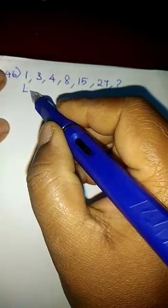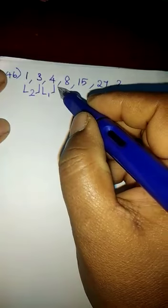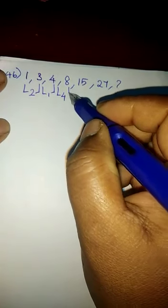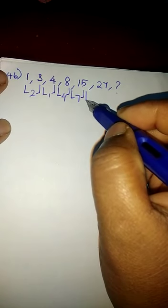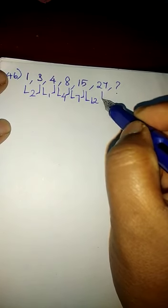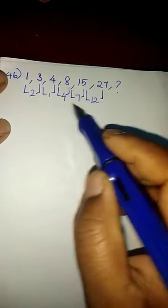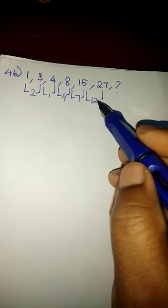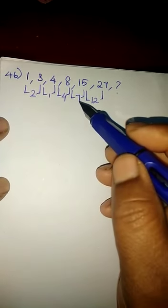Now we have to find the difference between the adjacent numbers. This is plus 2, here 1, here 4, here 7, and here 12. See, there is no common difference between these numbers. So we have to choose another method.